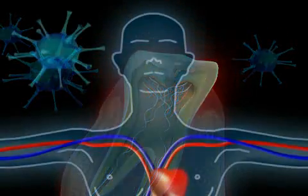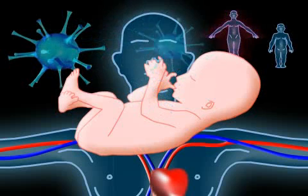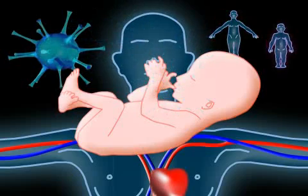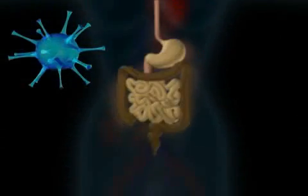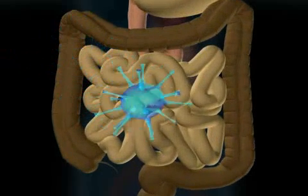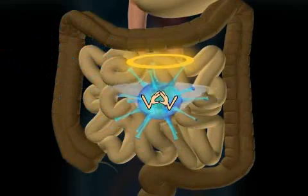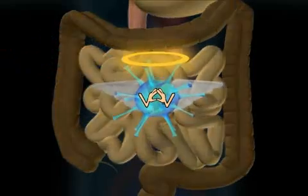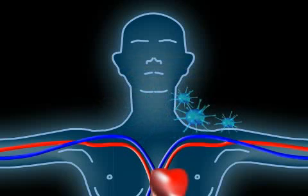Our bodies are occupied by numerous bacteria. Bacteria settlement usually starts immediately after birth because of our parents and our environment. Not all bacteria are harmful. For example, the bacteria flora in our intestinal tract is crucial for our survival — this is called symbiotic bacteria. Other bacteria simply settle in niches; these are called commensal bacteria.